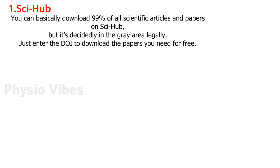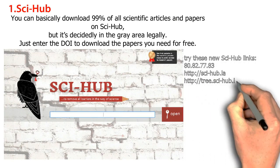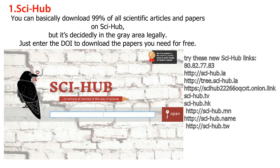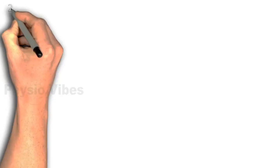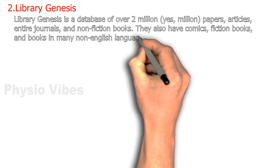Sci-Hub is decidedly in the gray area legally. Just enter the site and download the papers you need for free. Try these new Sci-Hub links — just type your search request, for example the title of an article, or the DOI or URL of the journal, and press enter.